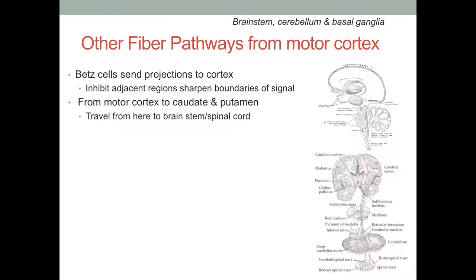What you're seeing in that picture is a nice anatomical representation where in the center we see these striatal areas — the caudate and the putamen right above the thalamus. The red nuclei: if you look in this picture on the midbrain slice, you see the red nucleus.